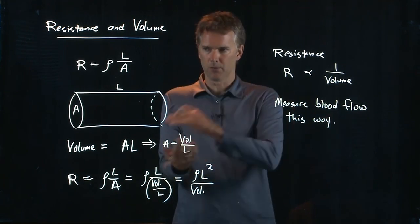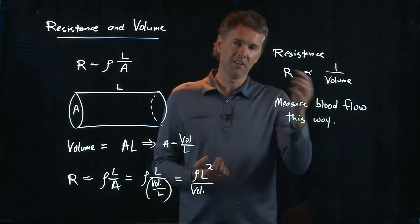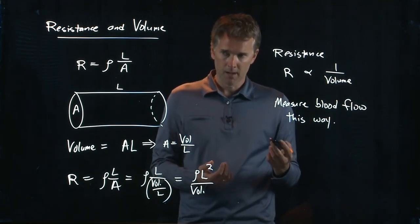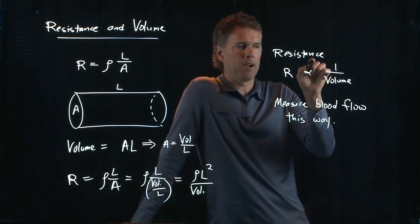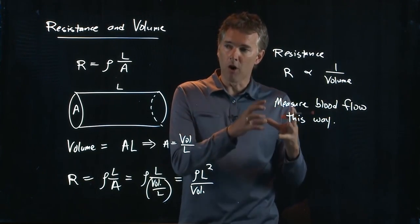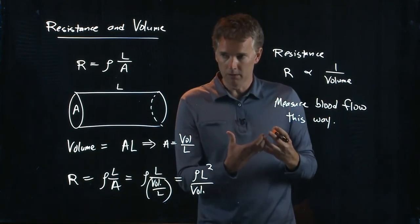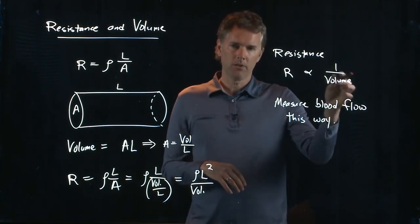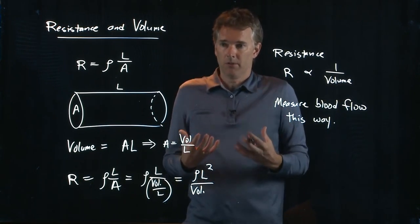Put an electrode here, you put an electrode there. You can measure the resistance of that circuit. And if that resistance is proportional to one over the volume, namely the volume of blood flow, then you can calculate how much blood flow there is.